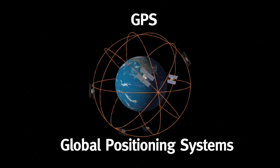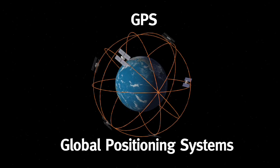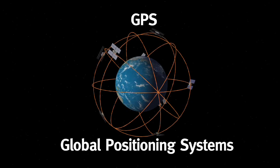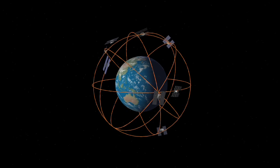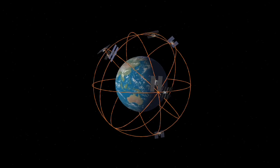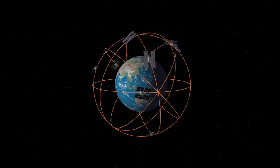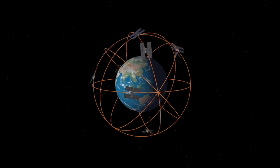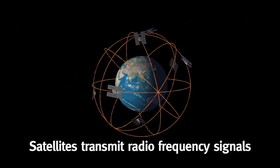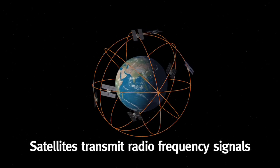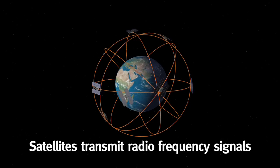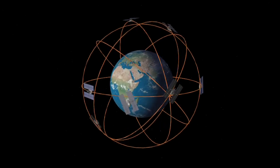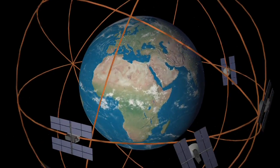This involves a network of 24 satellites orbiting the Earth. These satellites were originally placed there by the US Department of Defence for military purposes but are now freely available for all of us to use. These satellites orbit the Earth twice a day at a speed of around 11,000 kilometres per hour and transmit precise radio frequency signals to GPS receivers on Earth.